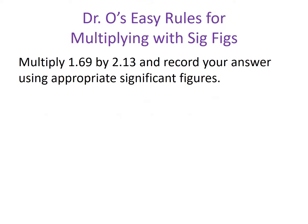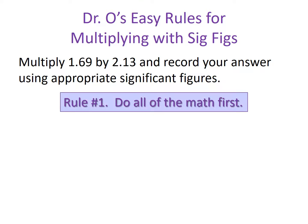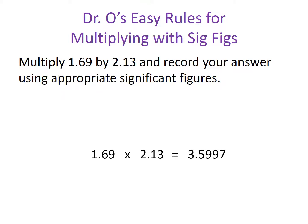Let's say we had a problem where we're being asked to multiply 1.69 by 2.13 and record our answer in the correct number of significant digits. Rule number one says do all the math first. We multiply 1.69 by 2.13, and that equals 3.5997. And with that, we're done with rule number one.